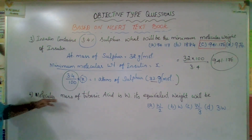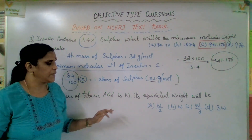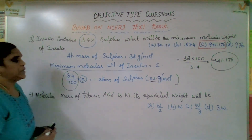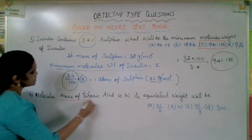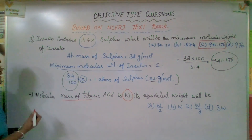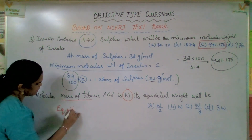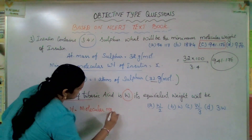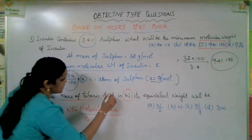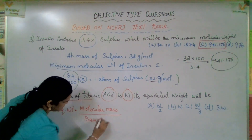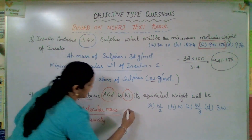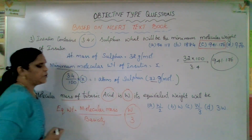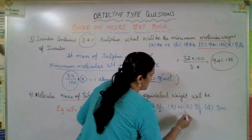The next question. Molecular mass of a tri-basic acid is W. Its equivalent weight will be — options are provided. Equivalent weight equals molecular mass divided by basicity. Because it is an acid, we use basicity. Molecular mass is W; tri-basic means basicity is 3. So equivalent weight equals W by 3. Option C is the correct option.